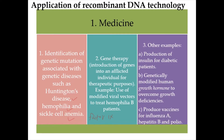Other examples are the production of insulin for diabetic patients, producing genetically modified human growth hormone to overcome growth deficiencies — specifically in pituitary dwarfism — and to produce safe and effective vaccines against influenza A, hepatitis B, and polio.